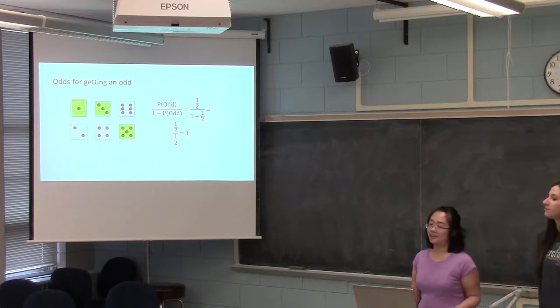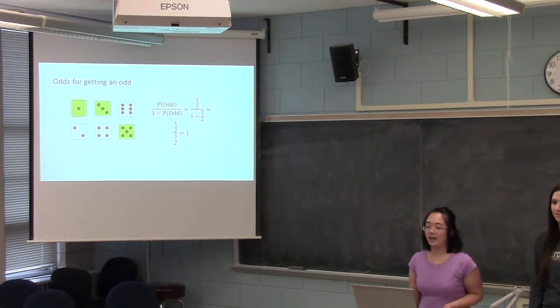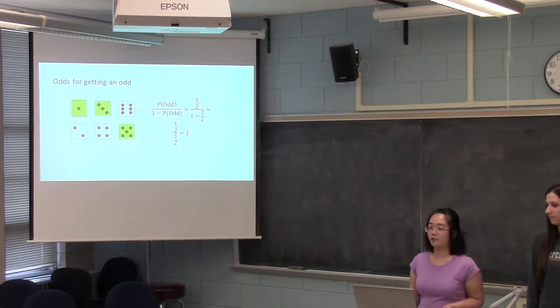So the odds for getting an odd, you again take the probability of an odd and divide that by the probability of not an odd. And they have the same probability, 1 half. So that'll give you an odds of 1 for getting an odd. So you get 1 odd for every not odd.